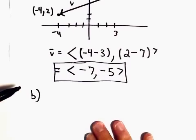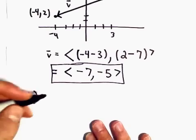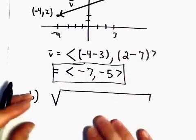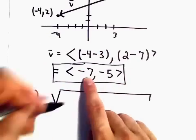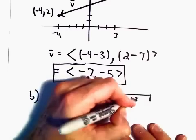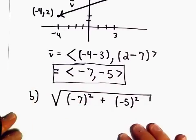Part B, we wanted to know the length. Well, to get the length, all we do is we just take the square root. We take each component and we square it. We take negative 7 squared, we take negative 5 squared, and then we add those together.